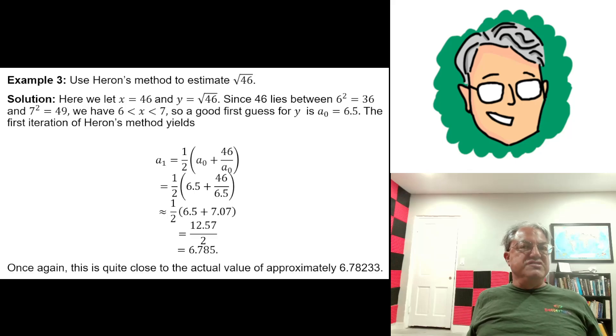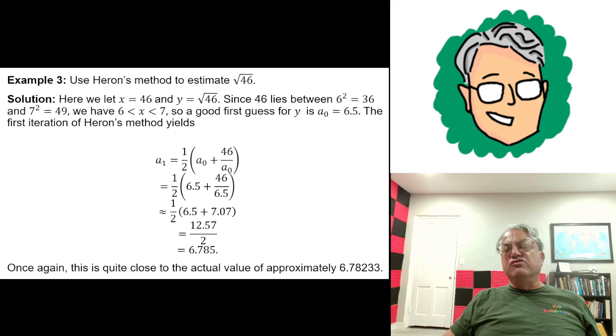This works for pretty much any number you start with. Let's do a third example. I was just doing one-digit examples. Let's try a two-digit example. It's really not any harder with two digits. So let's try the square root of 46. Well, 46 happens to be between 6 squared, which is 36, and 7 squared, which is 49. So let's again split the difference. Let's try to start with a_0 equals 6.5.